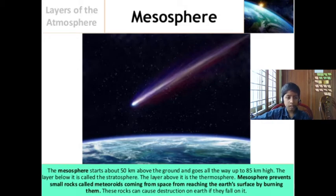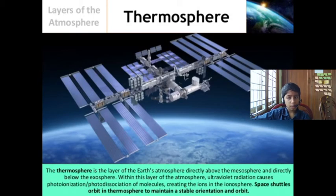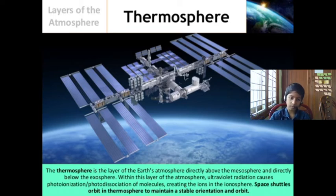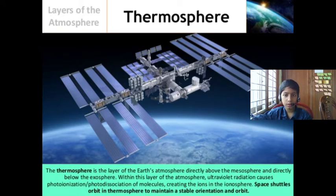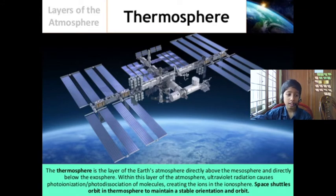The next layer is thermosphere, which is the fourth layer. Thermosphere is the layer of atmosphere directly above the mesosphere and directly below the exosphere. Above thermosphere there is exosphere and below thermosphere there is mesosphere.